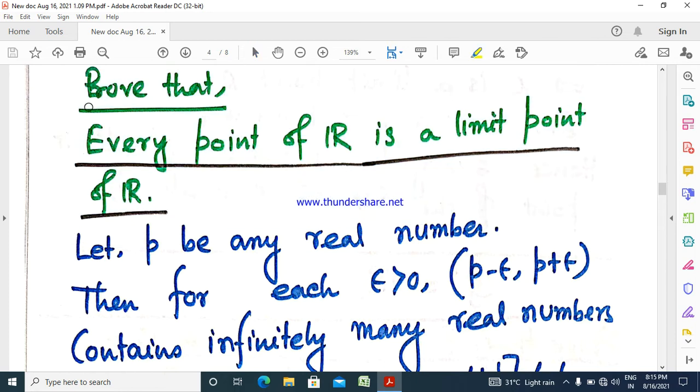R dash equals R. That is, this is an example of a set whose derived set is that set. Every point of R is a limit point of R.